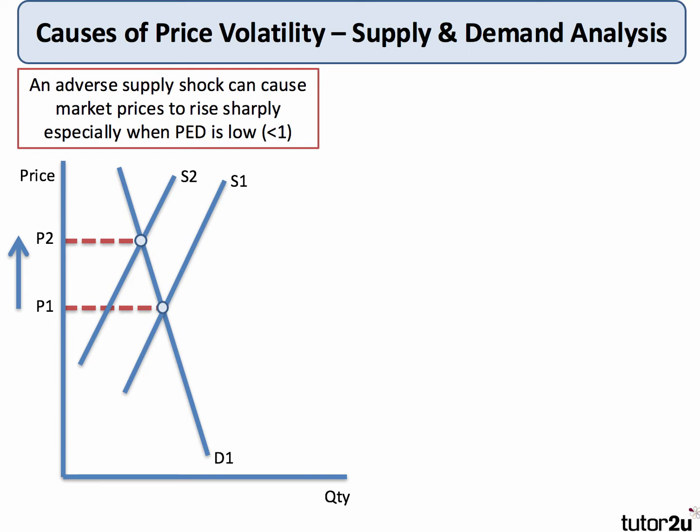The adverse supply shock causes a shift in supply from S1 to S2, and that drives the price higher for a given level of demand. The key revision point is that the supply shock will cause greater price volatility if the price elasticity of demand (PED) is less than 1. The demand curve is drawn as fairly inelastic — prices will be more volatile if the elasticity of demand is low.